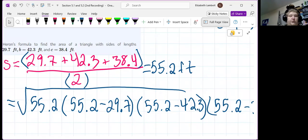So, 55.2, the square root in front, times, open parentheses, 55.2 minus 29.7, close, times, open. And then, 55.2 minus 42.3, close, times, open. 55.2 minus 38.4, close, close, close. And there it is.